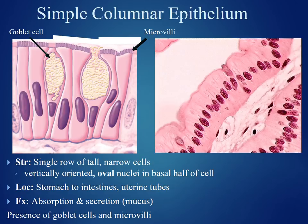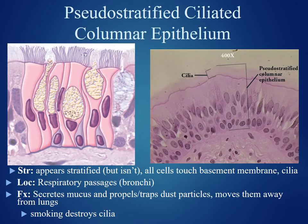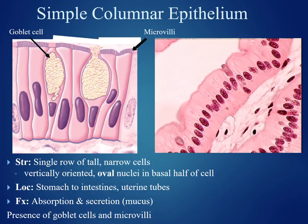A helpful trick for this tissue: notice in the image that all the nuclei are roughly oriented in a linear fashion. This is going to be a key difference from our next tissue.